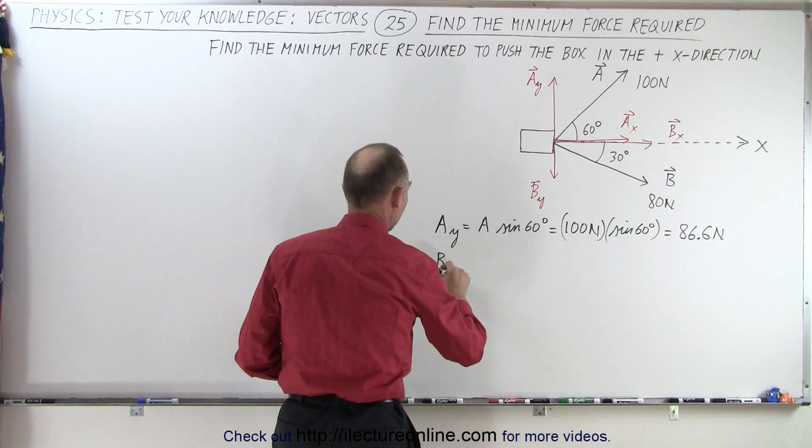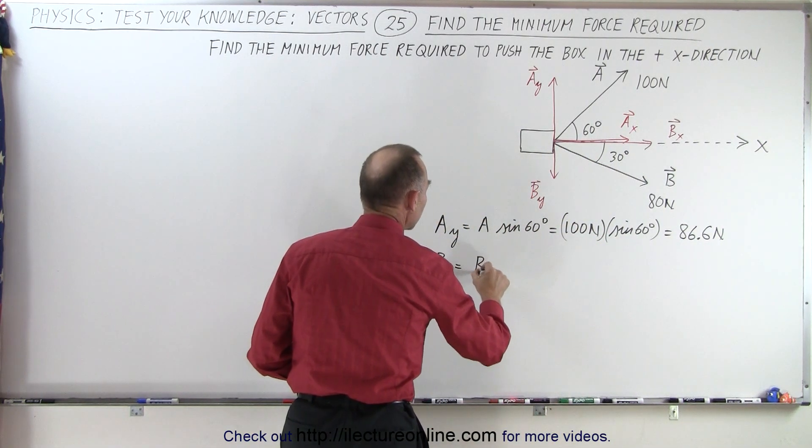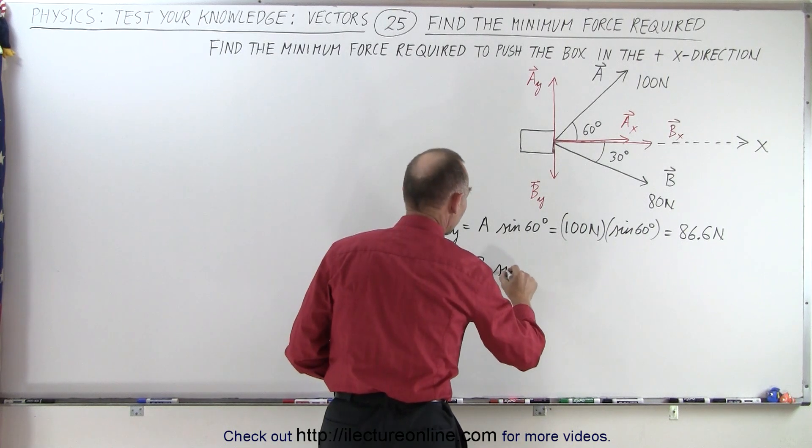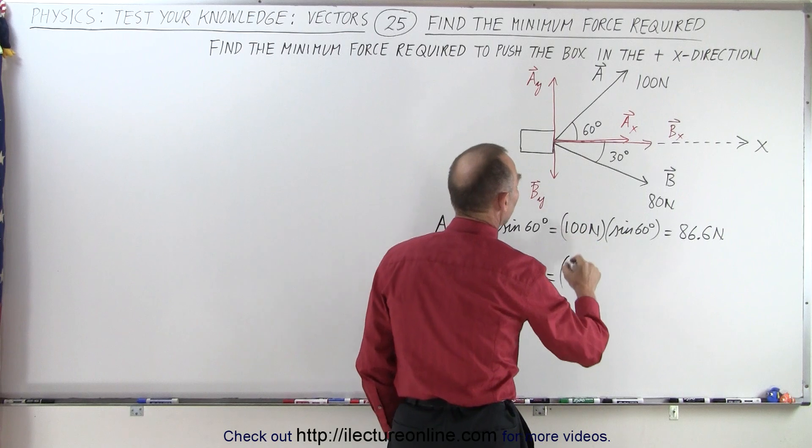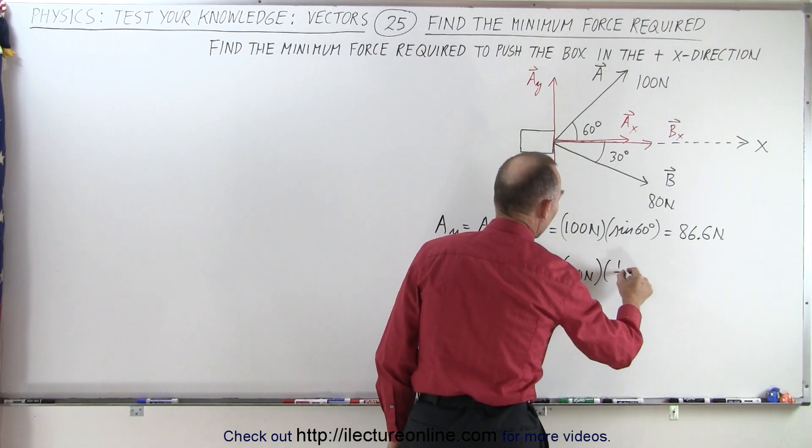Now we have b sub y, is equal to b times the sine of 30 degrees, which is equal to one half, so that's equal to 80 newtons times one half,